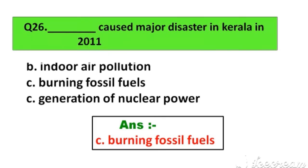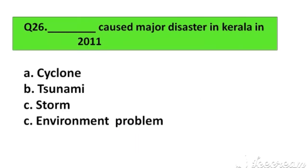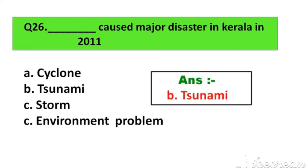Question number 26. What caused the major disaster in Kerala in 2011? Option A. Cyclone, B. Tsunami, C. Storm, D. Environmental problem. The right answer is Option B. Tsunami.